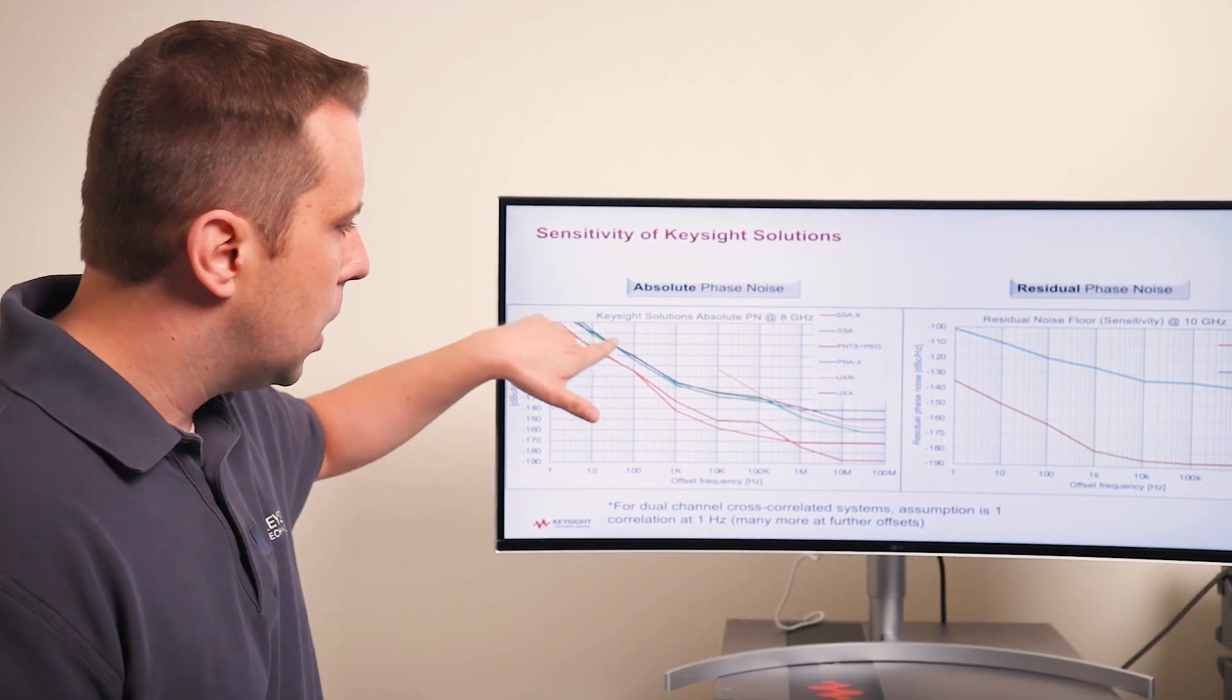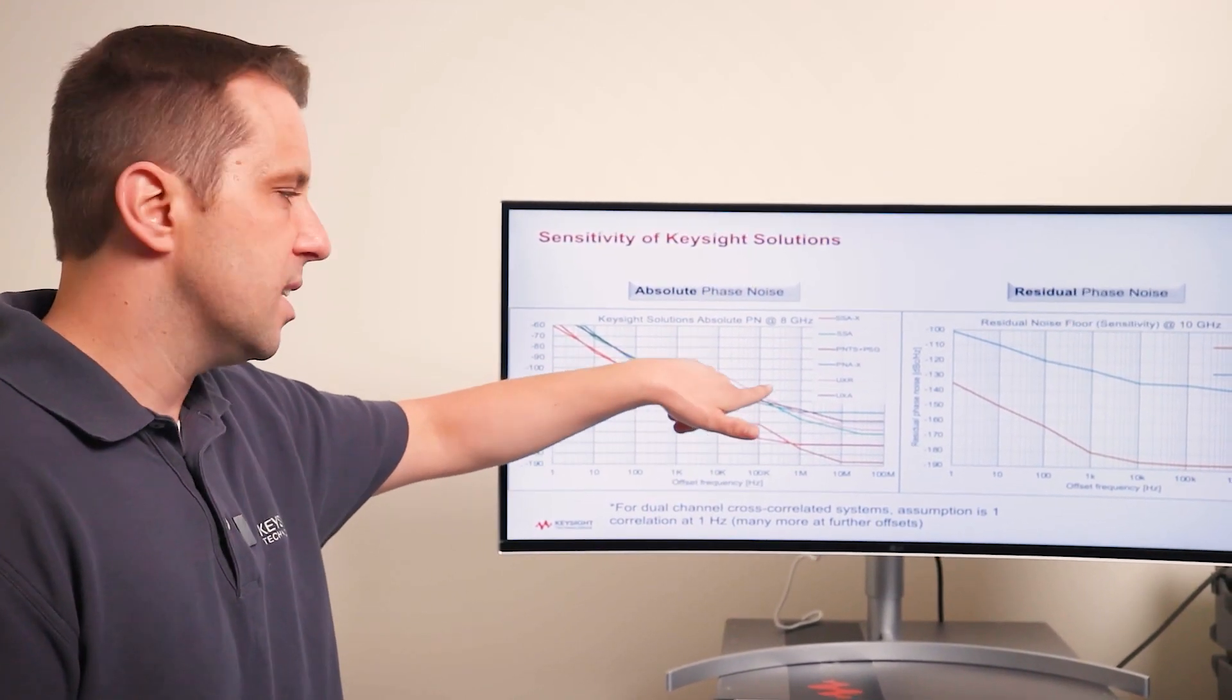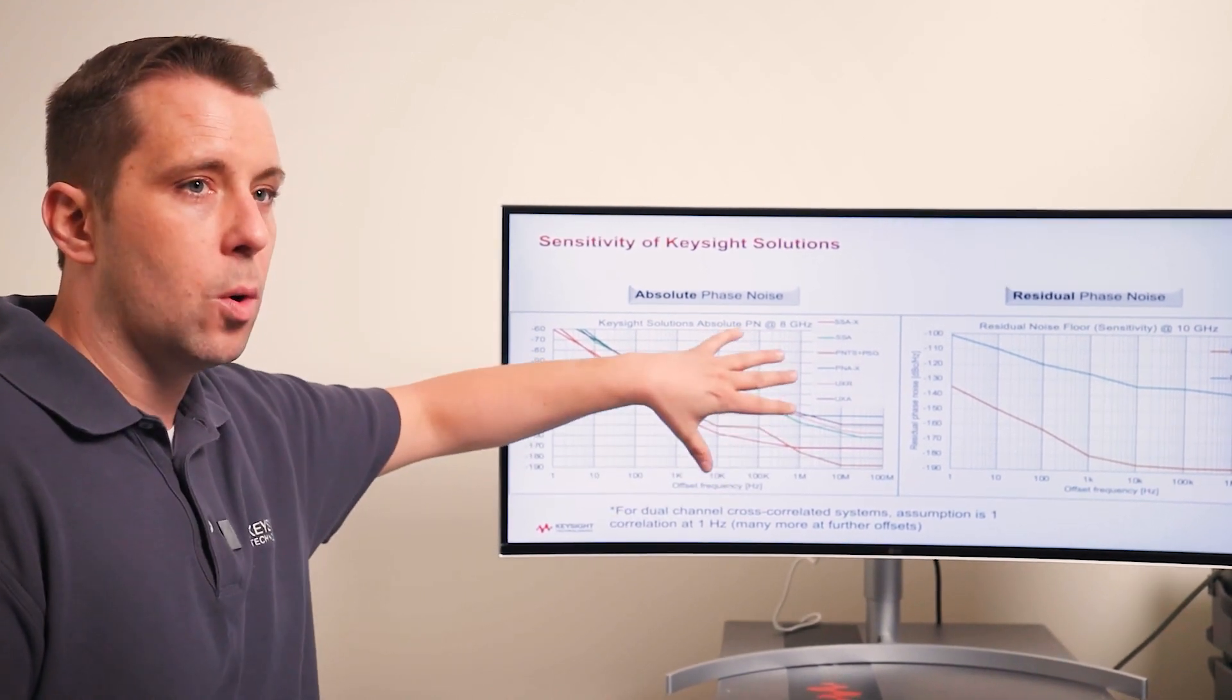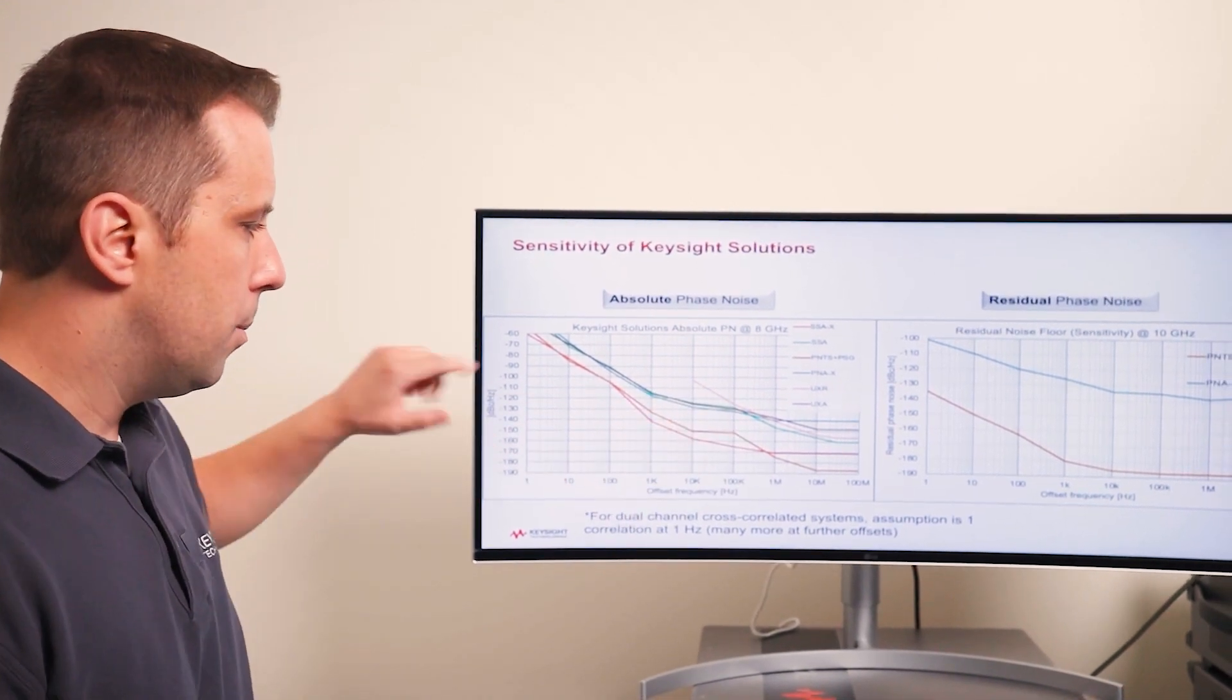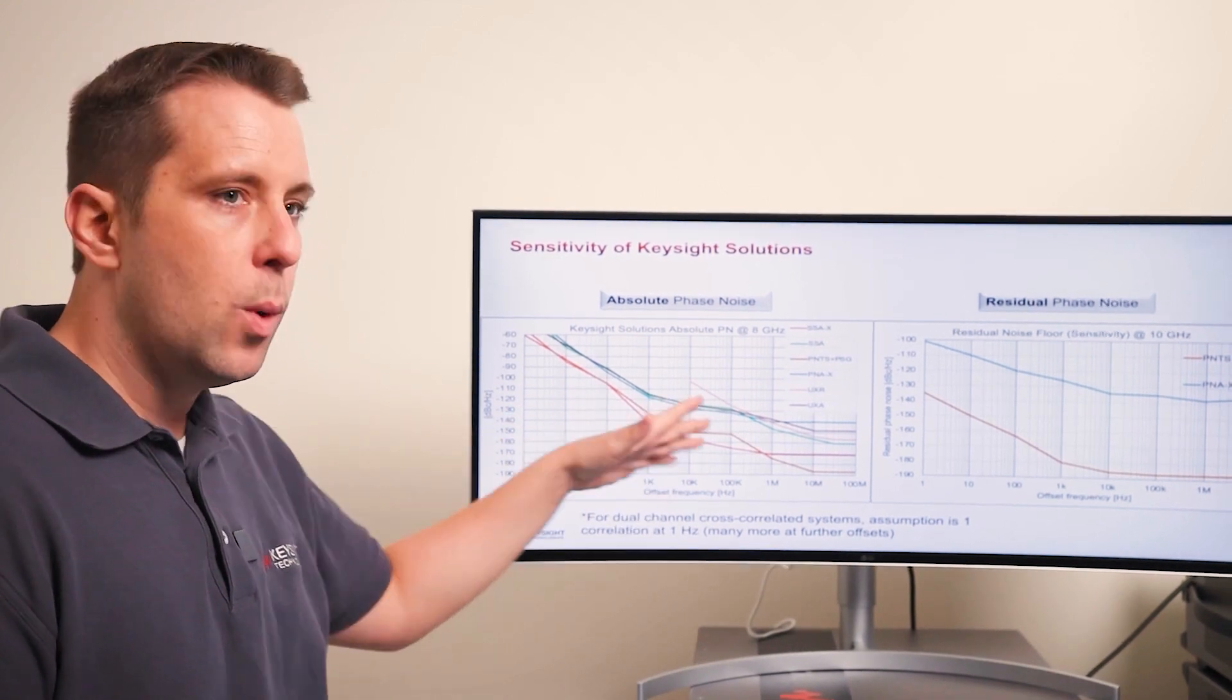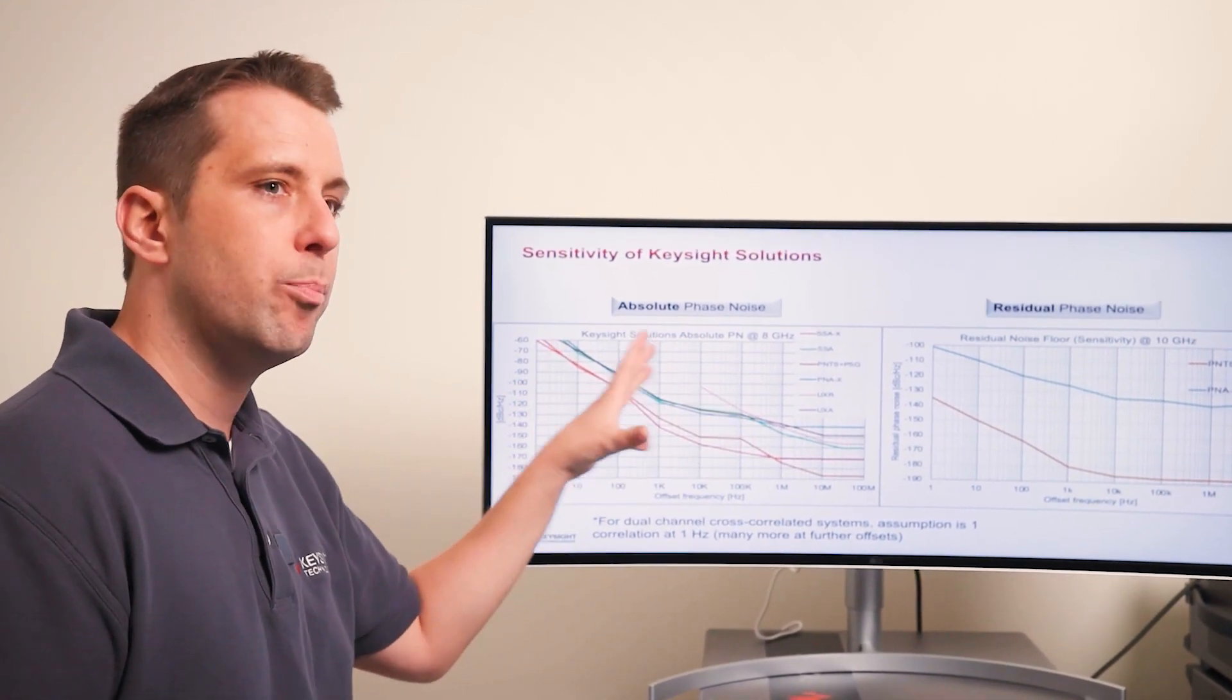Then we have a clustering of our other solutions: the PNA, the UXA, and the original SSA. Those are similar to each other, as well as the UXR. Our infinium oscilloscopes also make phase noise measurements now too. They're clustered kind of similarly in performance. The UXR really pulls ahead at the farther out offsets, and that's really its bread and butter.